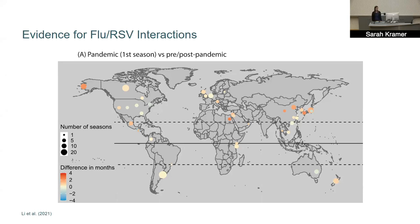The evidence is far from conclusive. Many studies suggest co-infections of flu and RSV are less severe than single infections, which would suggest a negative interaction. But there are also studies suggesting co-infections are more severe. The jury is very much still out on this question.